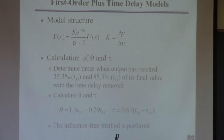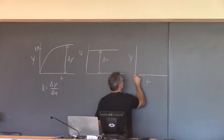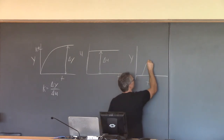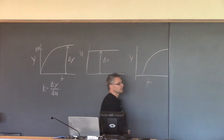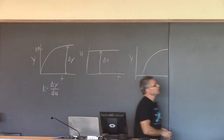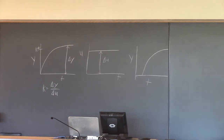What if the system seems to exhibit a time delay but is still first order? In that case, the output might look like this: you change the input, nothing happens for a while, and then it looks first order. There's a discernible time delay. So you want to use a model that has a gain, a time constant, and now this delay, theta.